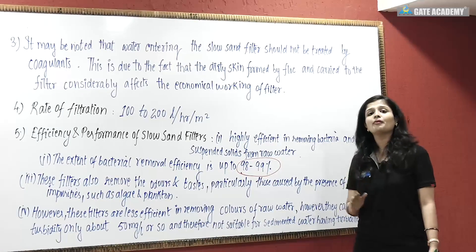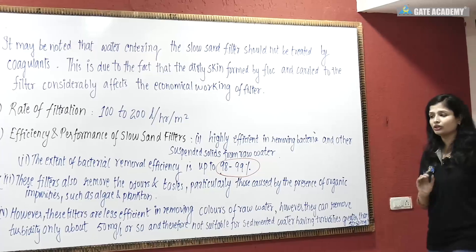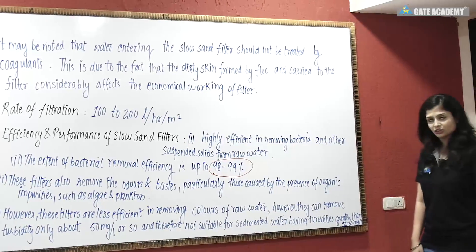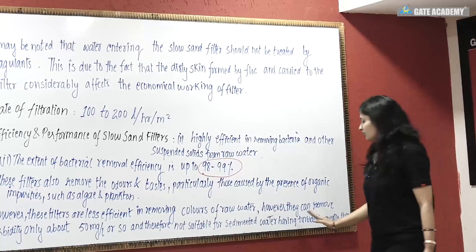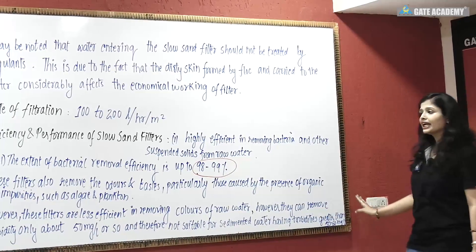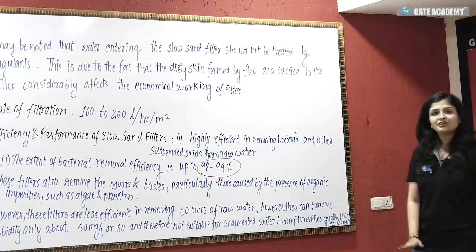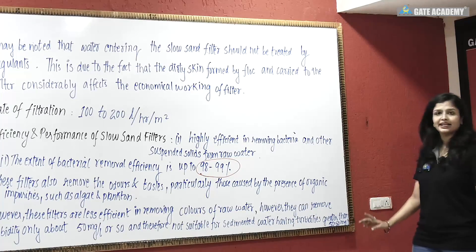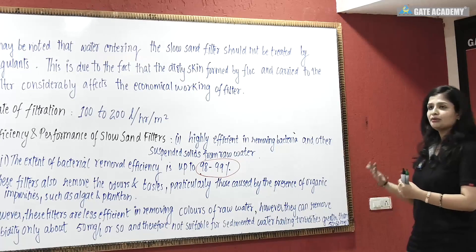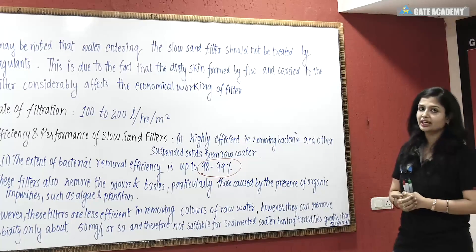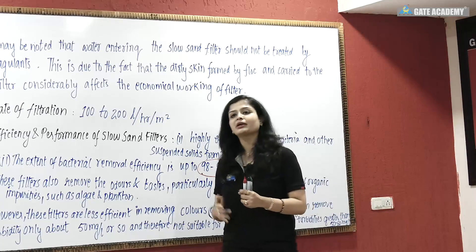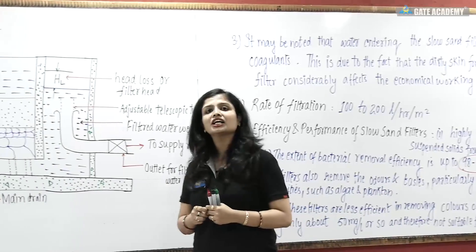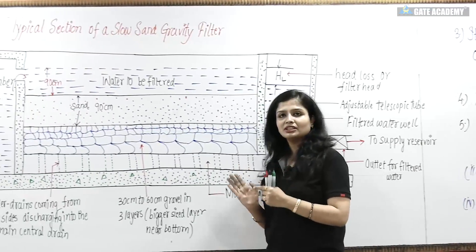These filters can remove turbidity only up to 50 mg per liter, and therefore are not suitable for water having turbidities greater than 50 to 60 mg per liter. If the turbidity is more than 50 mg per liter, you cannot use slow sand gravity filters. Similarly, if you don't have enough area for setup, or if you need to supply water for a large population requiring high volumes, slow sand gravity filters are not suitable.